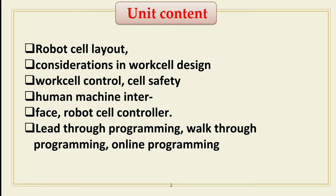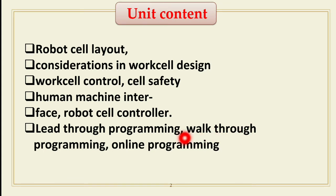The unit contents are: first, robot cell layout — the different types of layouts used in a robot work cell; second, considerations in work cell design; third, work cell control; fourth, cell safety; fifth, human-machine interface; sixth, robot cell control; and seventh, lead-through programming, walk-through programming, and online programming — the differences among these three.